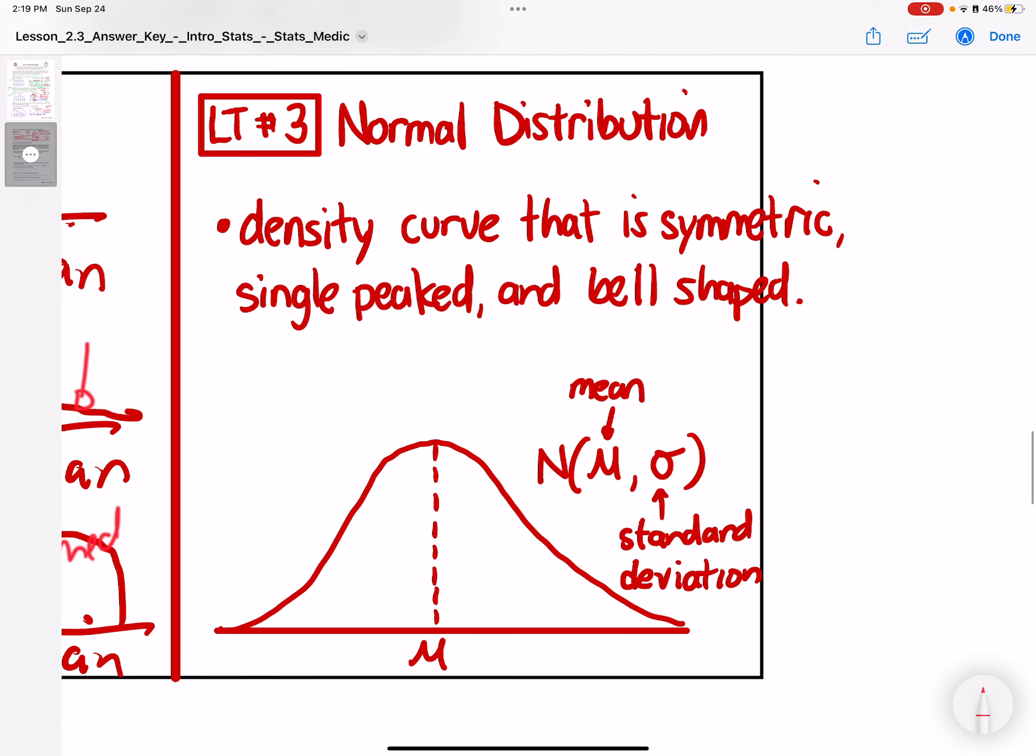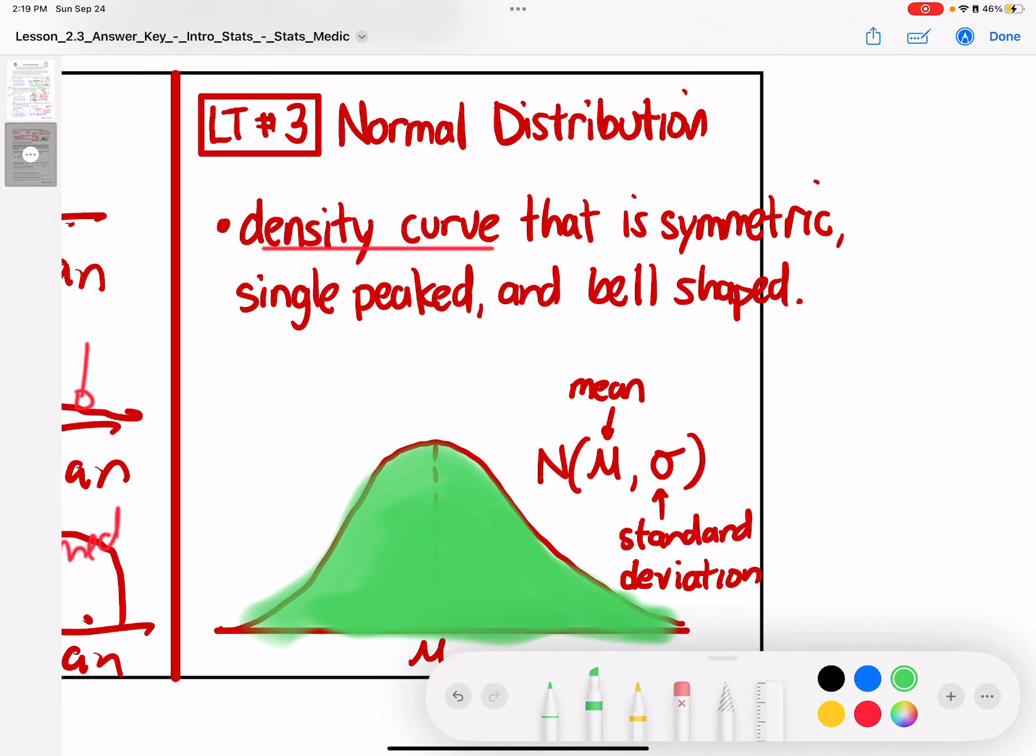The third learning target is about normal distribution. Normal distribution is a density curve. So if it's a density curve, what's the area under here? You're exactly right, it is 1. So if the area is 1, then 100% is shaded. The normal N(μ, σ), where μ equals the mean and σ equals the standard deviation. A density curve here that's a normal distribution is symmetric, single-peaked, and bell-shaped. We're going to learn more about the specific attributes that normal distribution has in the next few lessons.